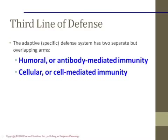The T cells mount a bigger response once they're bound. Our third line of defense gives us either humoral immunity — which is antibody-mediated immunity via B cells — or cell-mediated immunity, which is what T cells do. These are just two different pathways for immunity.